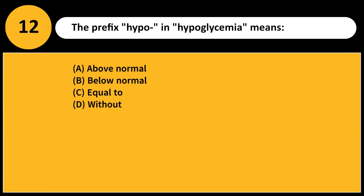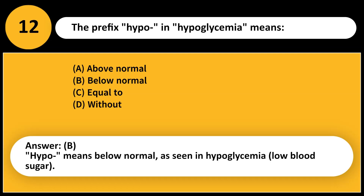The prefix hypo- in hypoglycemia means: A. Above normal B. Below normal C. Equal to D. Without. Answer: B. Hypo- means below normal, as seen in hypoglycemia — low blood sugar.